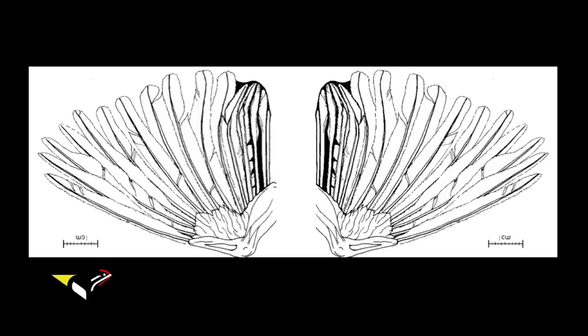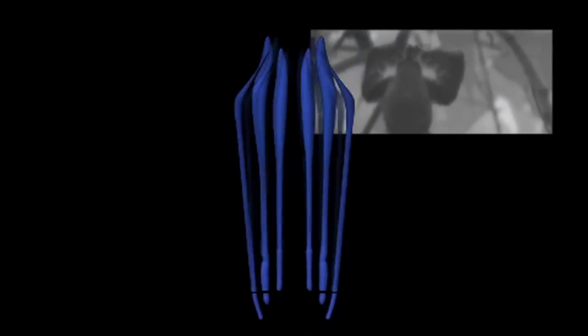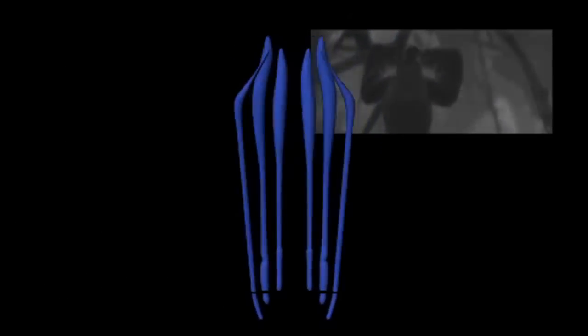We've got our set of three feathers on one side, three feathers on the other side. One of them is kinked and lies over the one next to it. As the wings oscillate and the bird's knocking its feathers together, that pick feather, the one with the kinked end, gets slid over its neighbor over and over again.